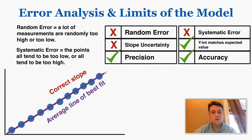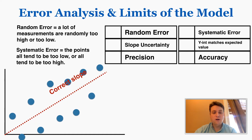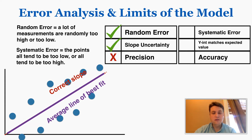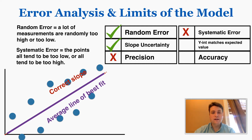I'll give you a few more examples to show how this works. I've given this data random error — the points are now far apart from each other in their expectation, so there's not much precision. The slope uncertainty is now large because the slope could be very small or very large. When there is random error, there is slope uncertainty and there is not precision. This does not affect the systematic error — there's no systematic error because there's no pattern in whether these dots are too low or too high. They're not all going in one direction; they're randomly too low or too high.